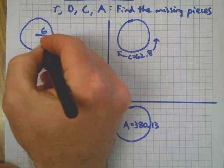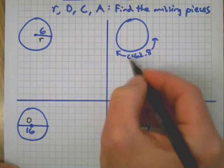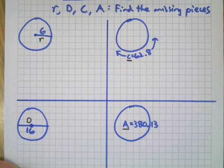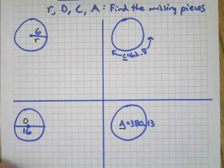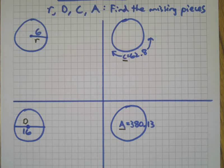In this one I gave you the radius, in this one I gave you the diameter, this one I gave you area, this one I gave you circumference. Go ahead and see if you can make those connections that we made in the last video and come up with all the missing pieces.